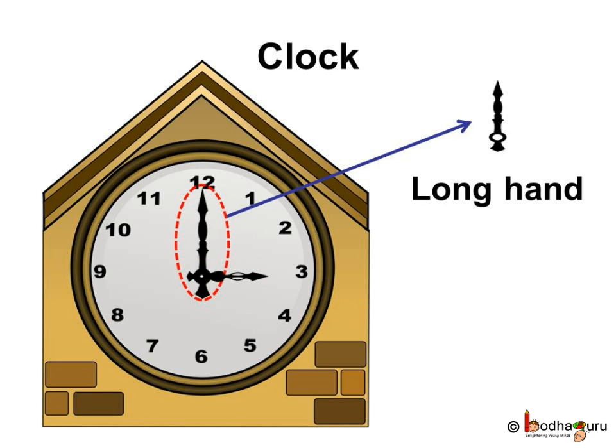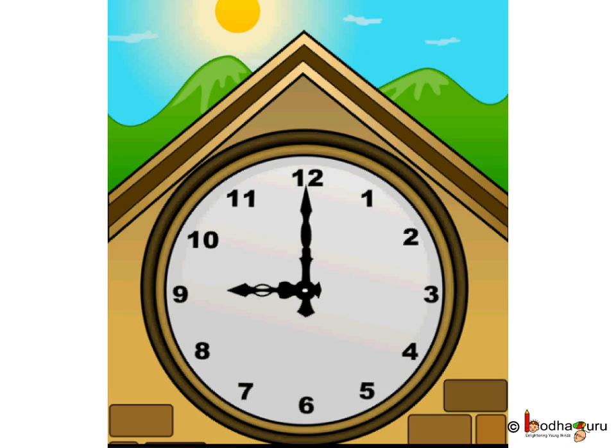While the longer one is called the minute hand or the long hand. Let us see how the hands in the clock move. Pay attention to the small hand which represents hour and the long hand that represents minute.